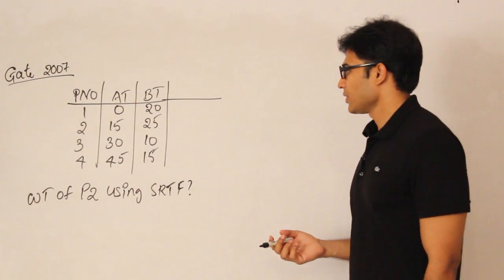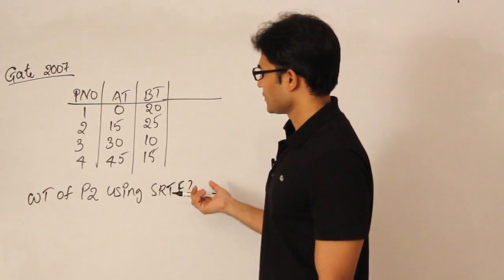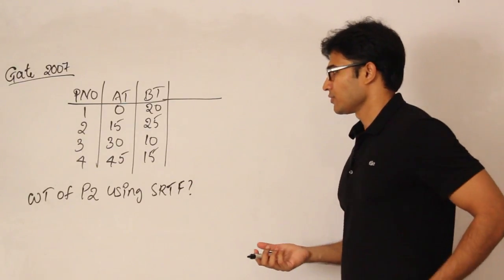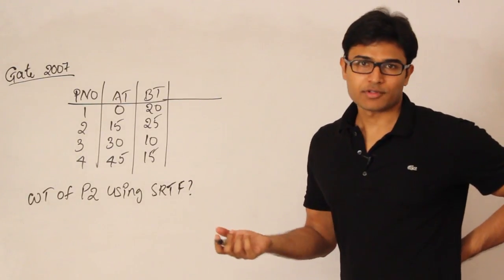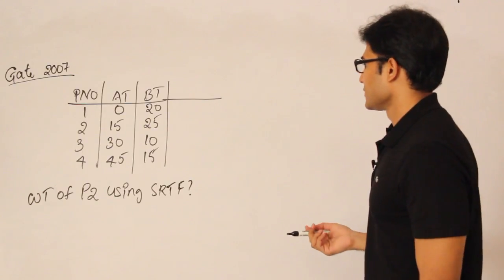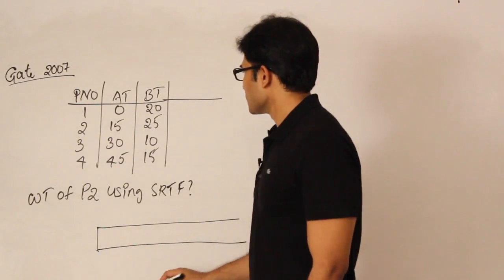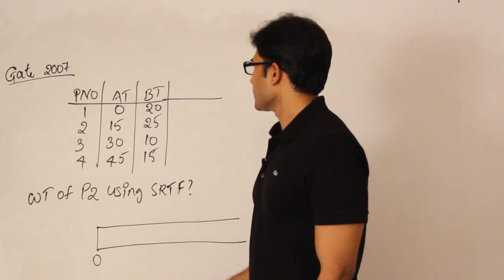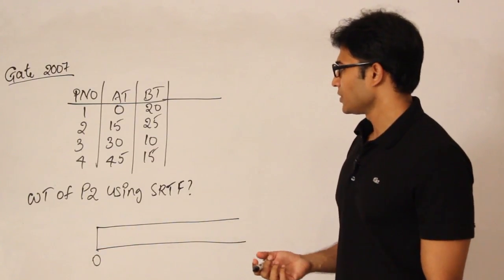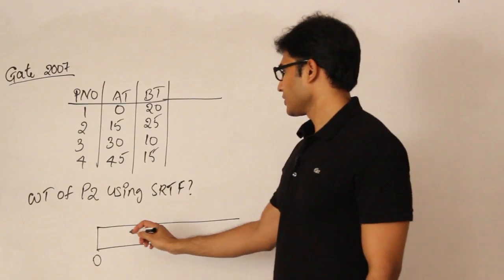Now it is asked in GATE 2007. They are asking about what is the waiting time of process P2 using SRTF. So even though they are asking for only one process, let's do for all the processes. So first thing is, you know that arrival time has to start from 0. And then only one process available as of now, which is P1.